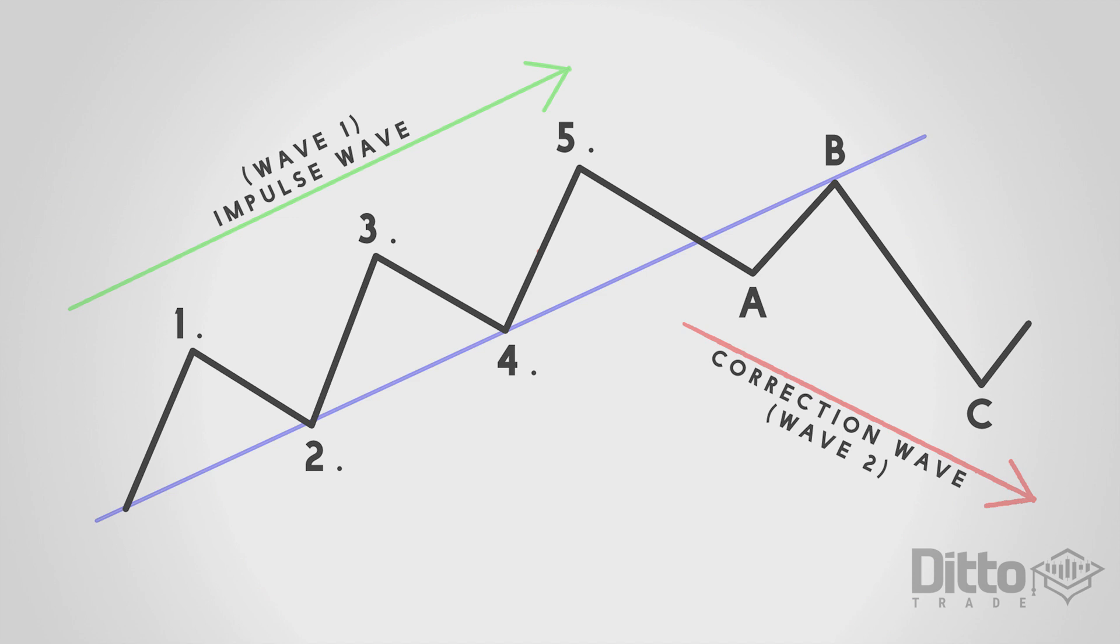The properties of the corrective wave normally have three distinct price movements. Two of the movements are usually in the direction of the correction. These are counter trend and one move will travel in the direction of the trend. Similarly in waves two and four of the impulse wave these are corrections against the trend.